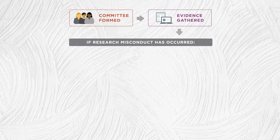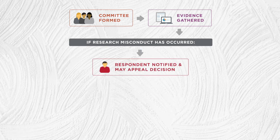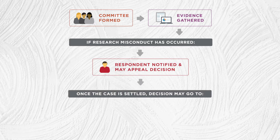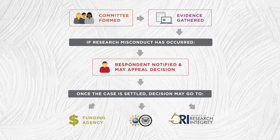If the committee determines that research misconduct has occurred, the respondent is notified and has an opportunity to appeal any decision. Once the case is settled, the decision may go to the funding agency, the Office of the Inspector General, or the Office of Research Integrity. All decisions are reviewed.